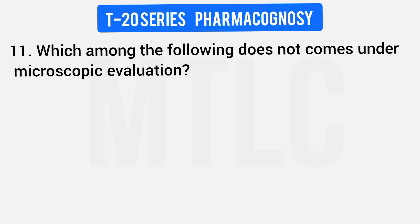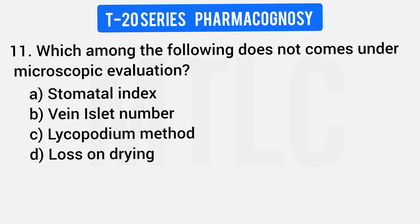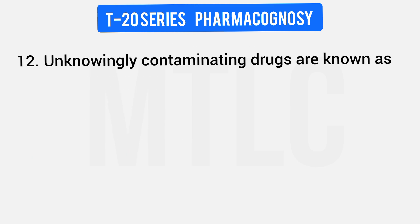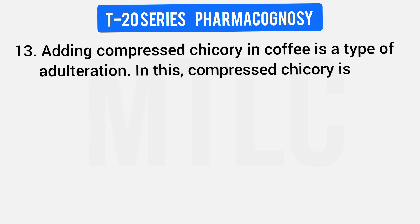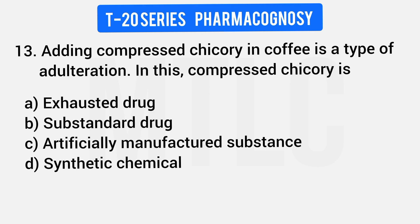Question 11: Which among the following does NOT come under microscopic evaluation? Options include Stomatal index, Vein-islet number, Lycopodium method, and Loss on drying. Loss on drying is the answer — it does not come under microscopic evaluation. Question 12: Unknowingly contaminated drugs are known as admixture. Adding compressed chicory in coffee is a type of adulteration.